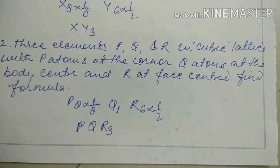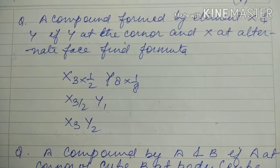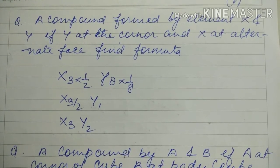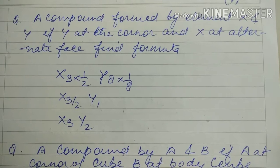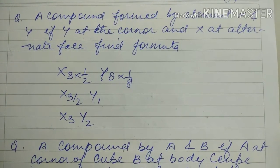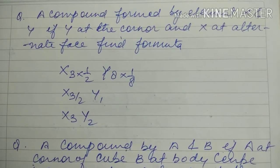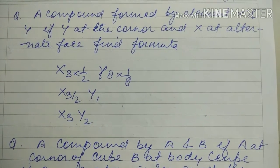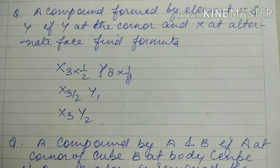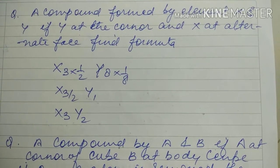Formula becomes PQR3. Next question: compound formed by element X and Y. If Y is at the corner and X at alternate faces, find out formula of compound. X is in only three faces, but participation is always 1/2, so it's 3 times 1/2. Y is FCC, 8 times 1/8, which is 1.